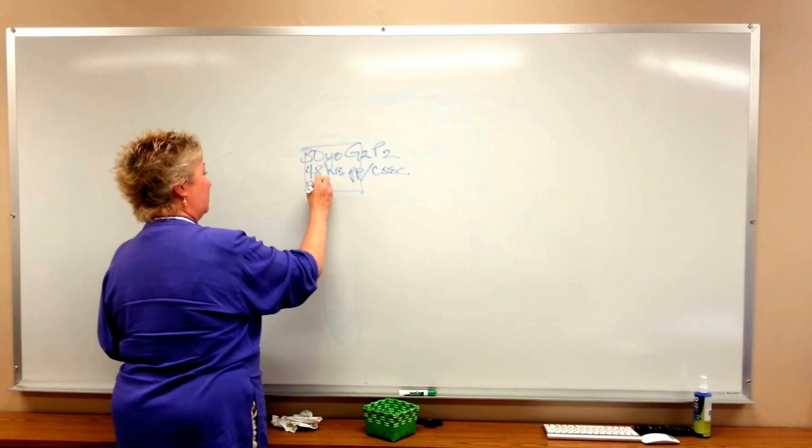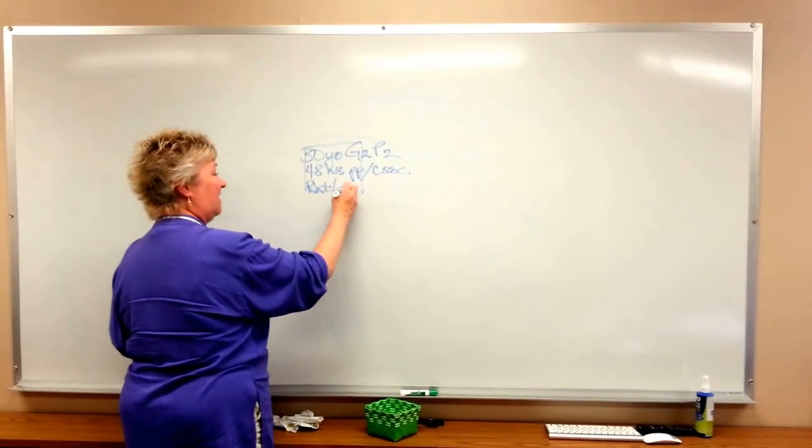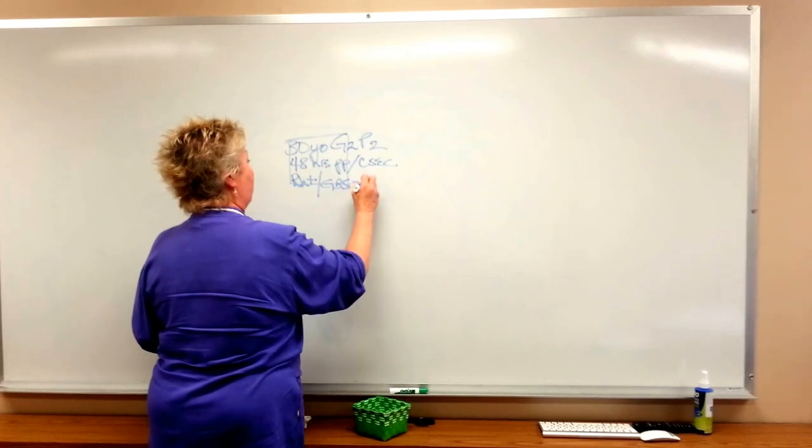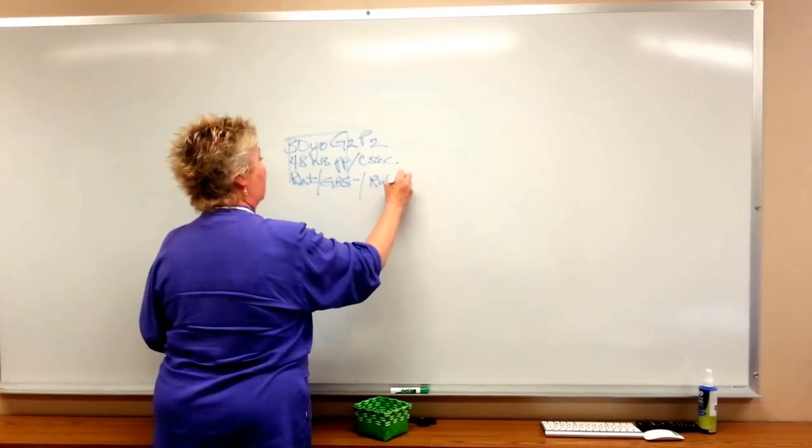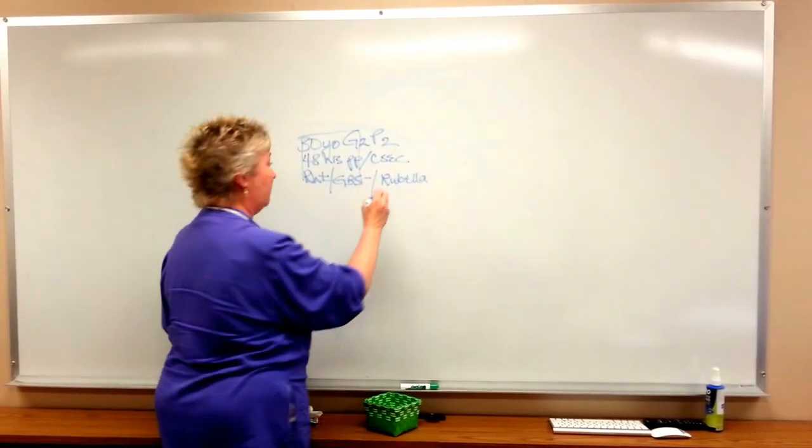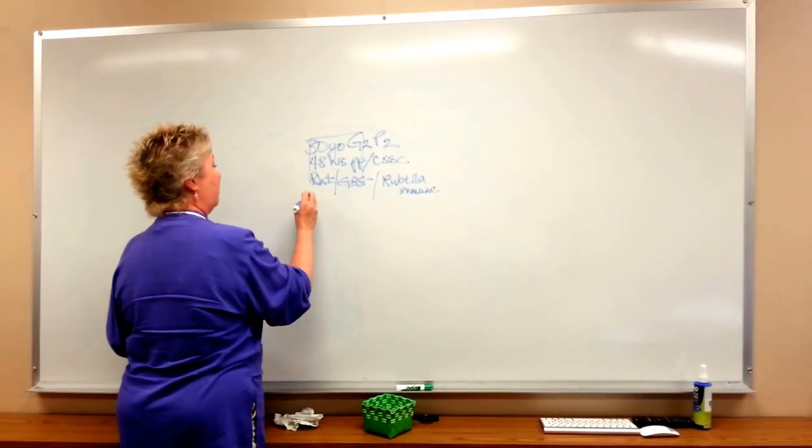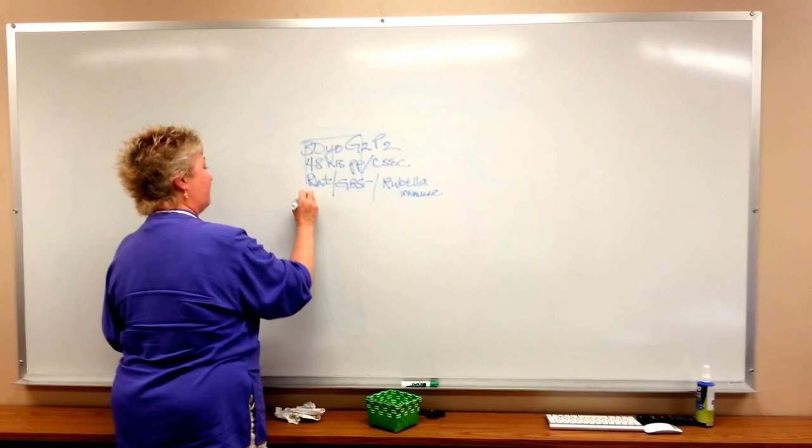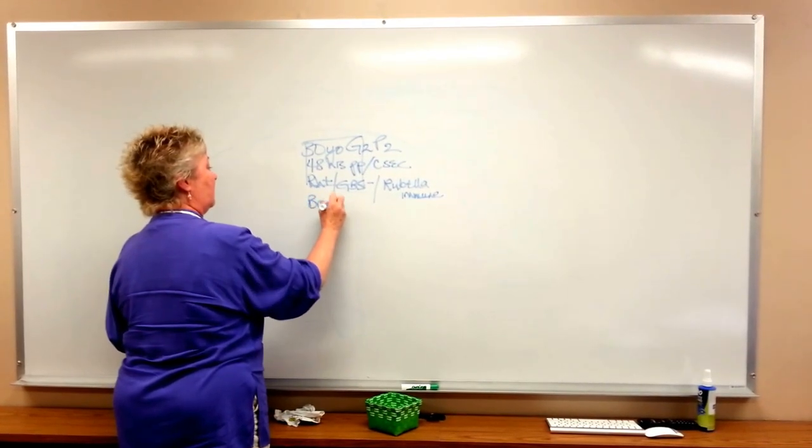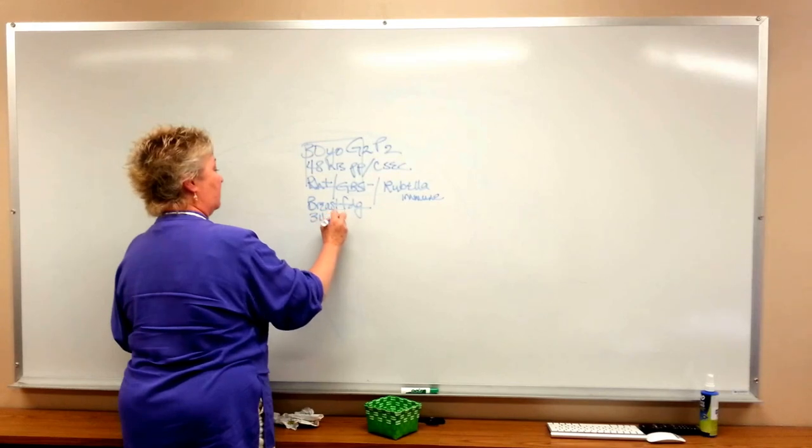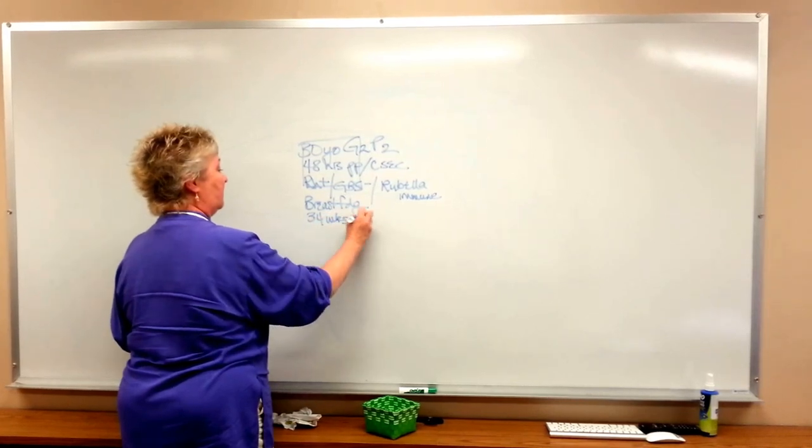She is RH positive, group B strep negative, Rubella immune, and is she breastfeeding this baby? And she's preterm, 34 weeks. Breastfeeding, 34 weeks, and baby's in the NICU.